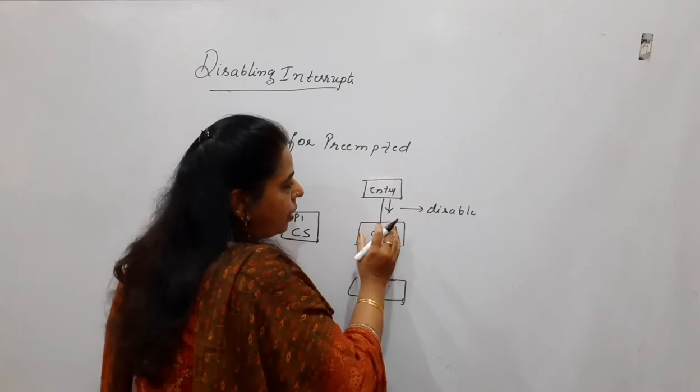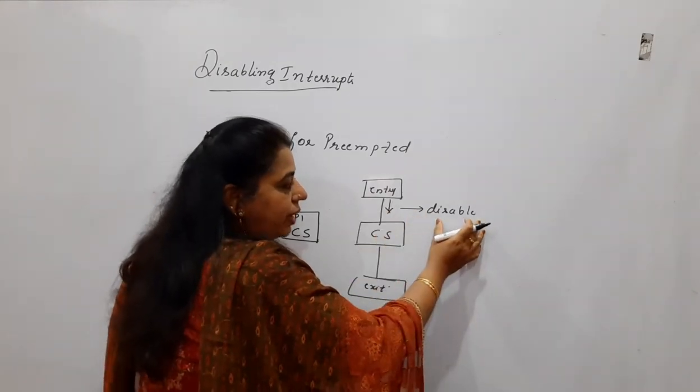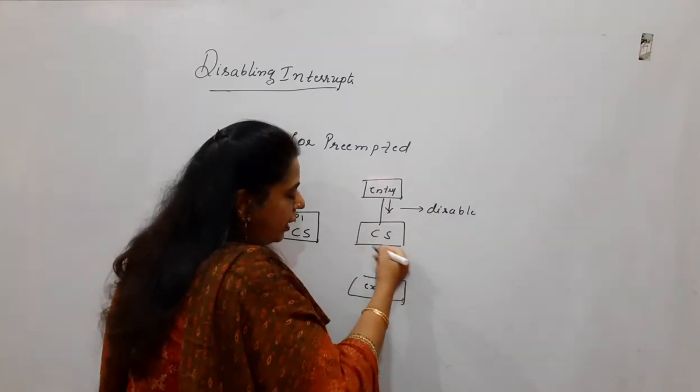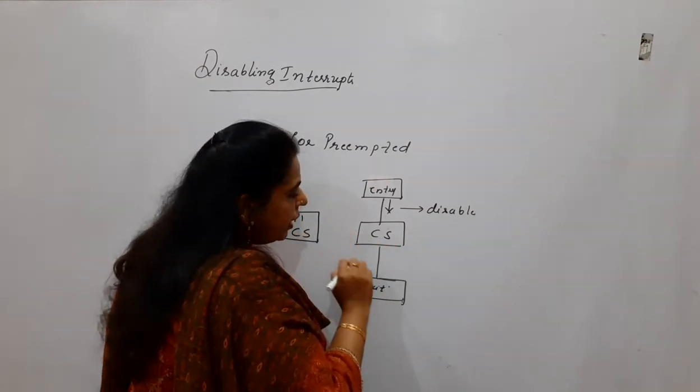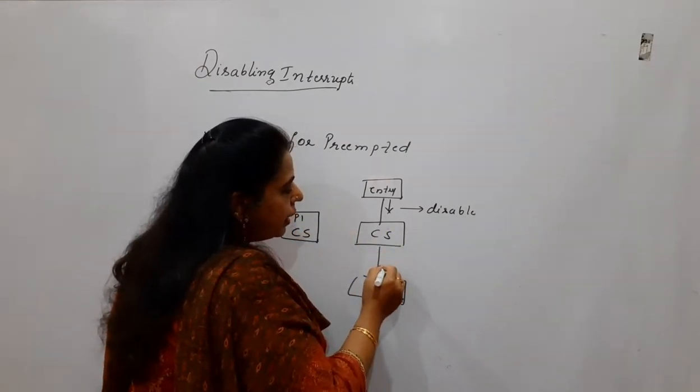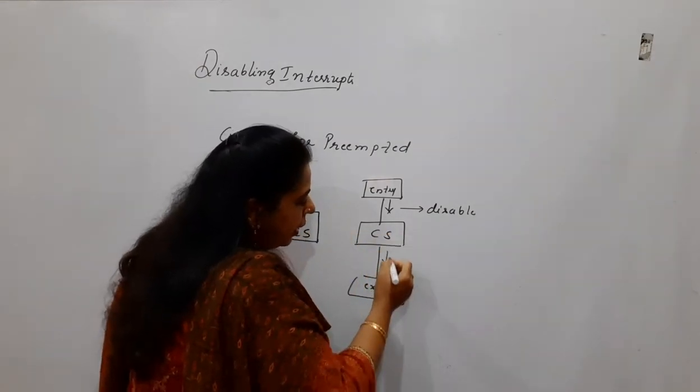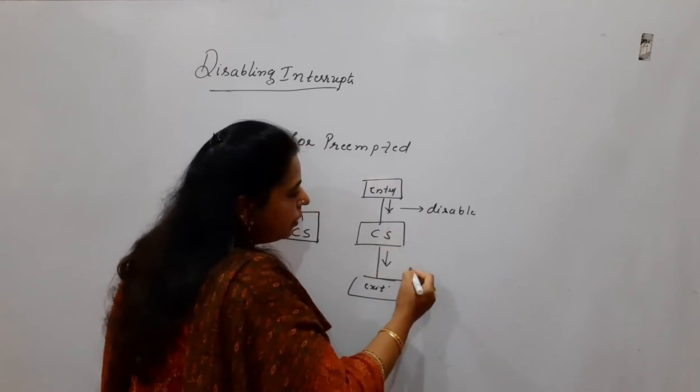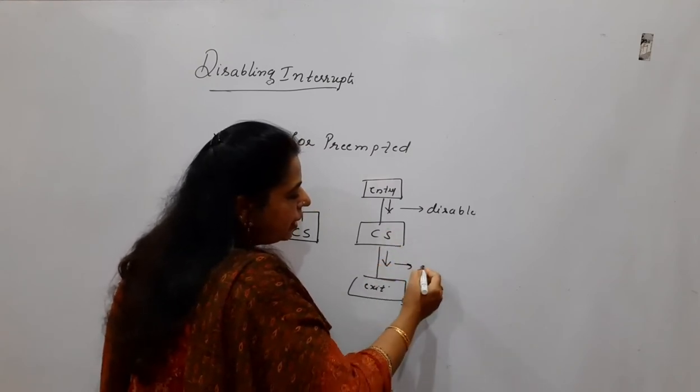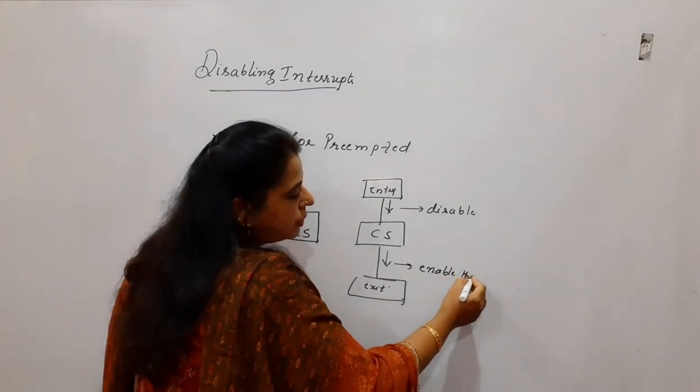Here, the process which is entering into the critical section has disabled the interrupts. It uses the shared variables or whatever job it has to do in the critical section. But at the time of leaving, that means after it comes out from the critical section, it has to enable the interrupts.